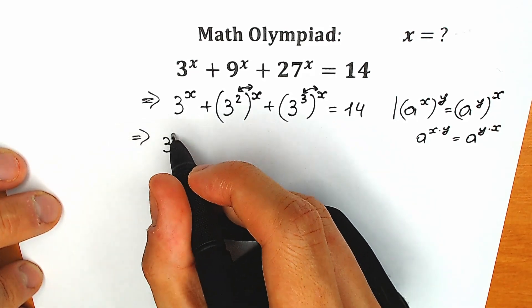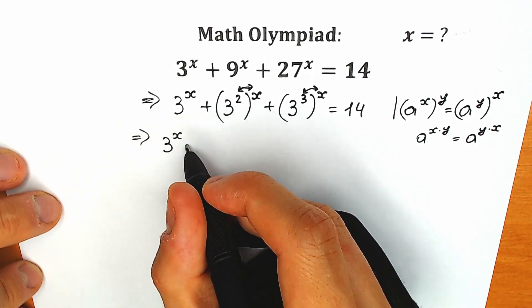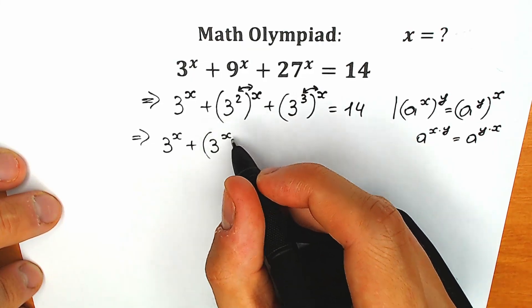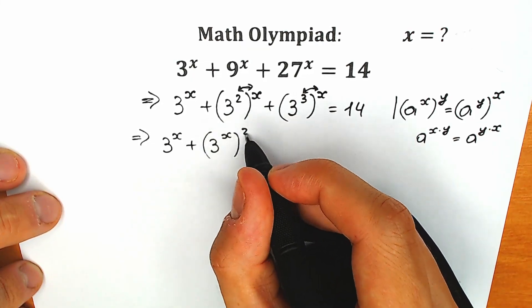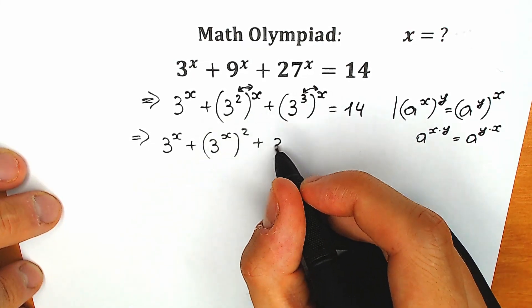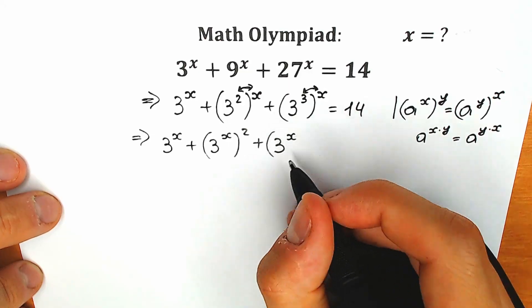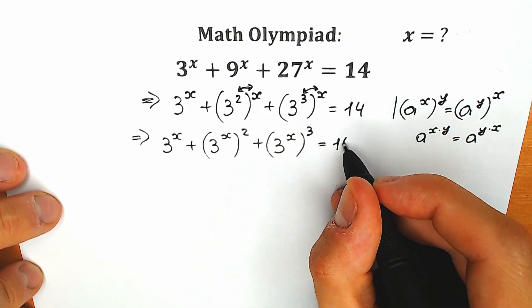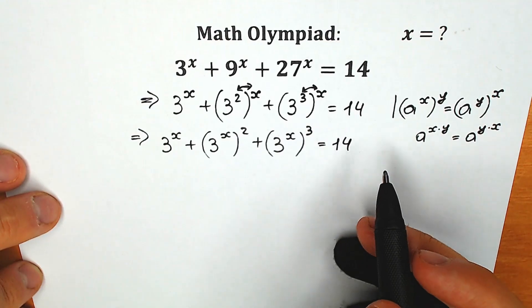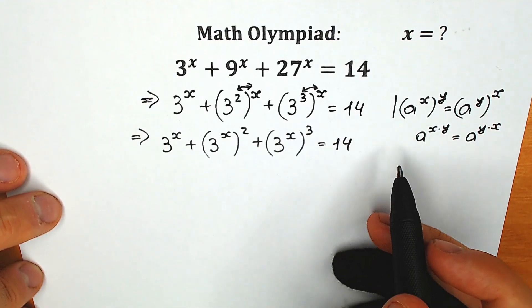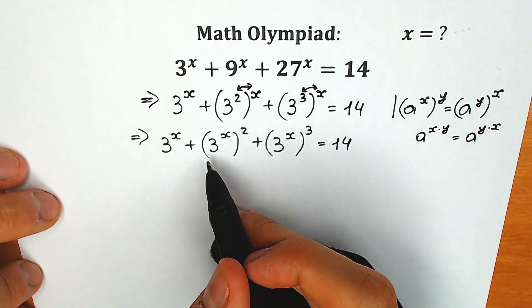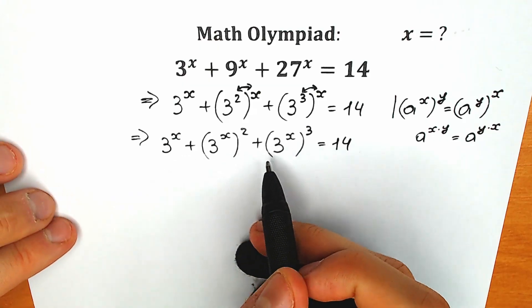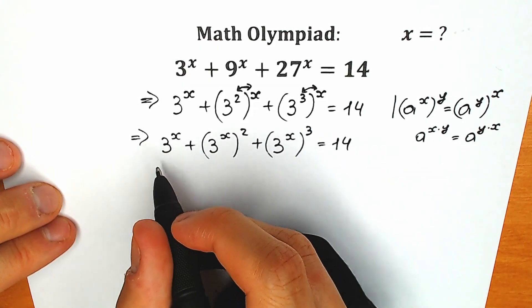So we have 3 to the power x, plus 3 to the power x in parentheses raised to the power 2, plus 3 to the power x in parentheses raised to the power 3, equal to 14. We have the same base, and it's great to work with this expression because we can easily write a substitution.